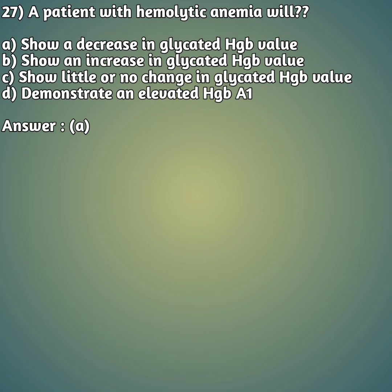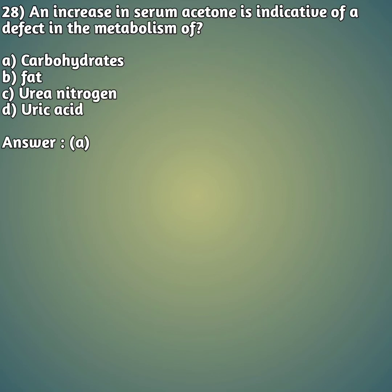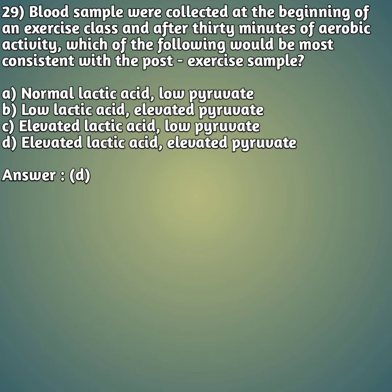Question 28: An increase in serum acetone is indicative of a defect in the metabolism of — option A: carbohydrate, option B: fat, option C: urea nitrogen, option D: uric acid. The right answer is option A, carbohydrate. Serum acetone is indicative of a defect in carbohydrate metabolism.